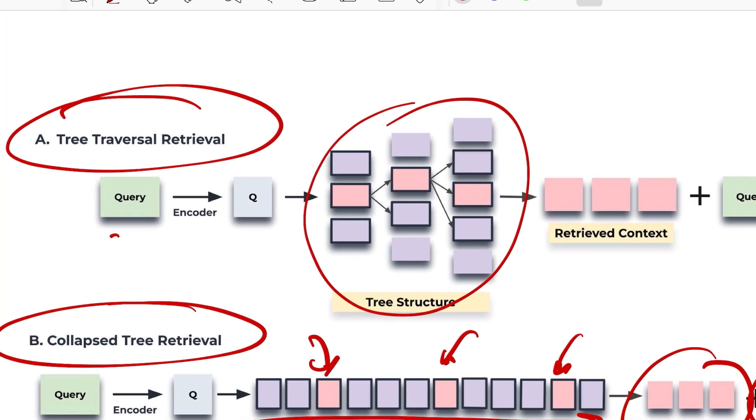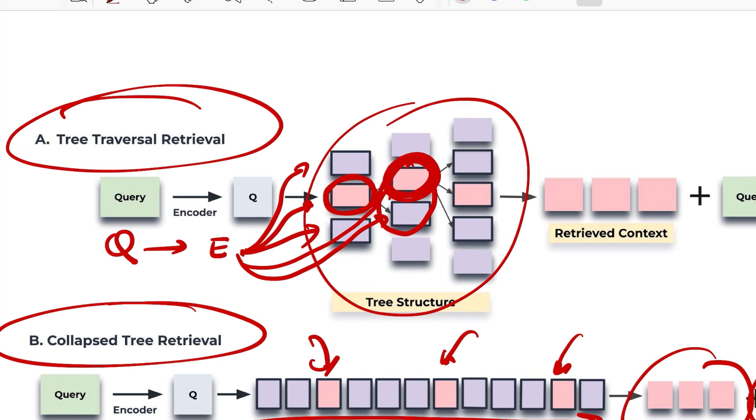The second is tree traversal retrieval where you follow the structure in which things are represented. So you have a query Q, you encode it, get embedding representation, and then do a similarity-based search on the root node. You say let's say okay, this is the best match that I can see across all three.